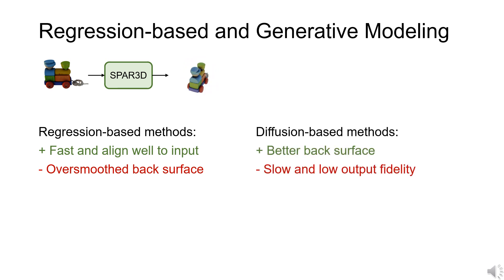Diffusion-based methods handle uncertain regions better by modeling distributions but are computationally expensive and the generation is often misaligned with visible surfaces.